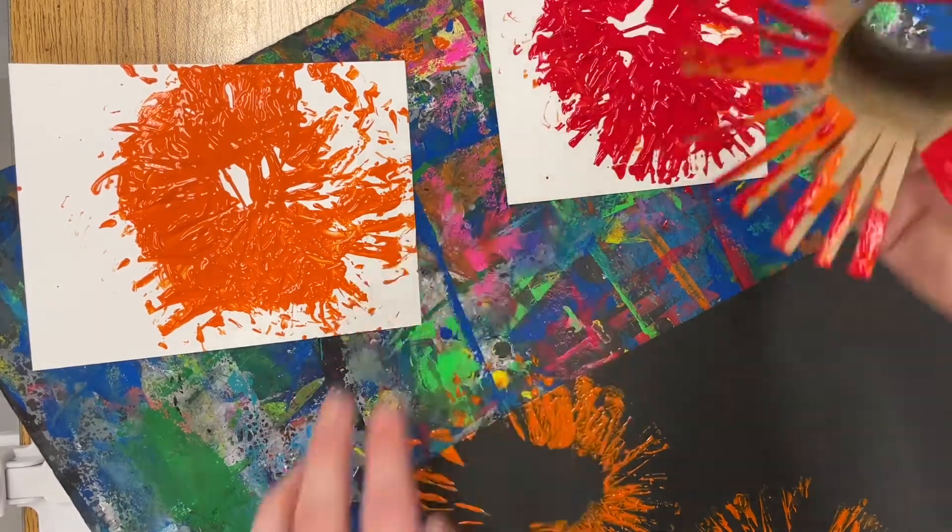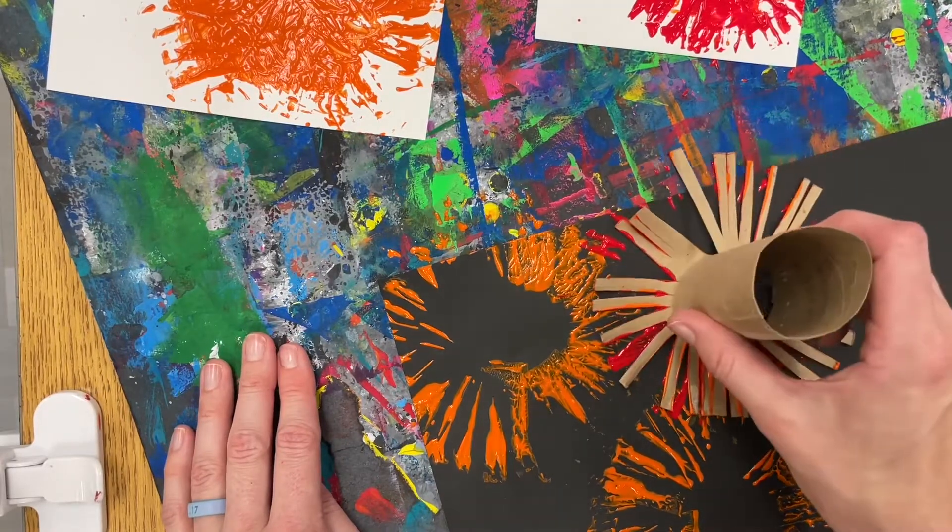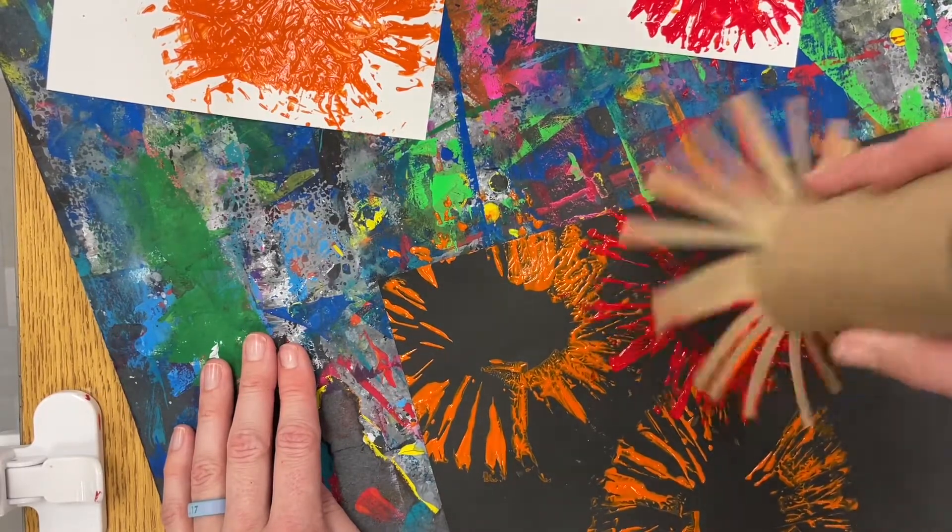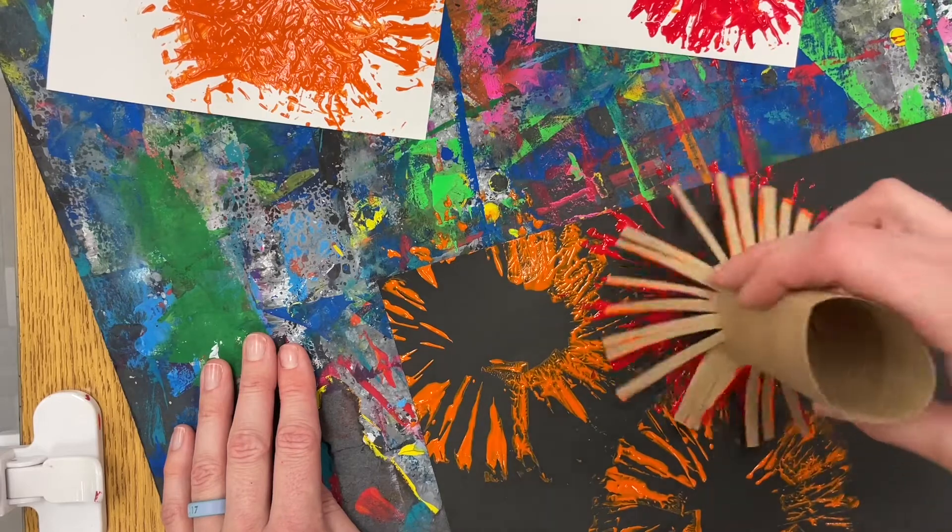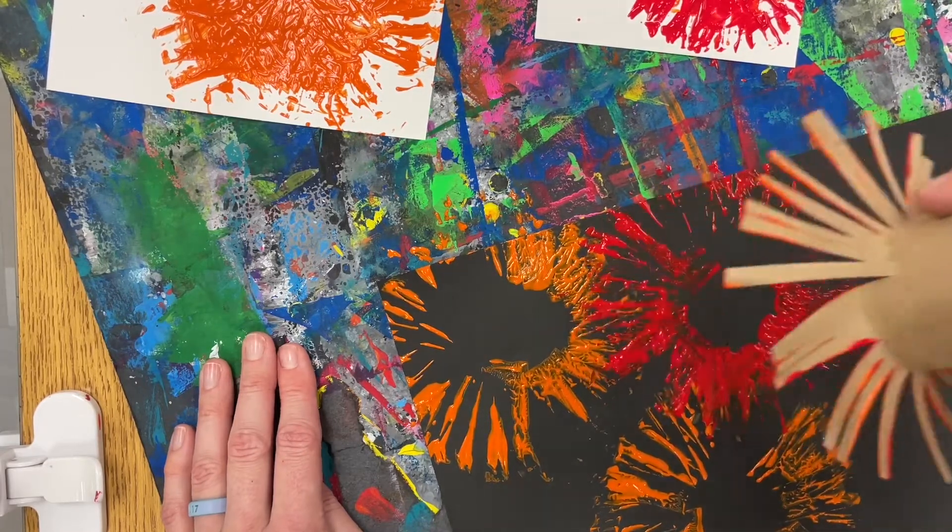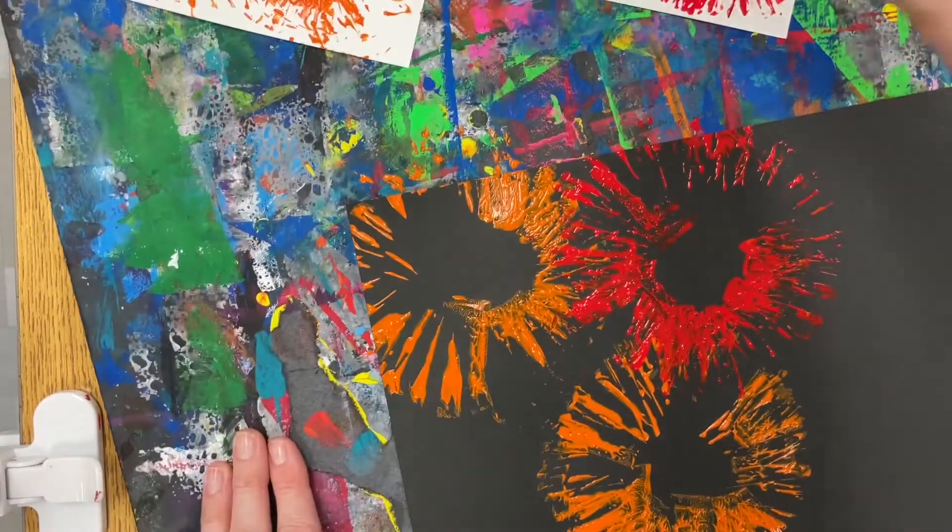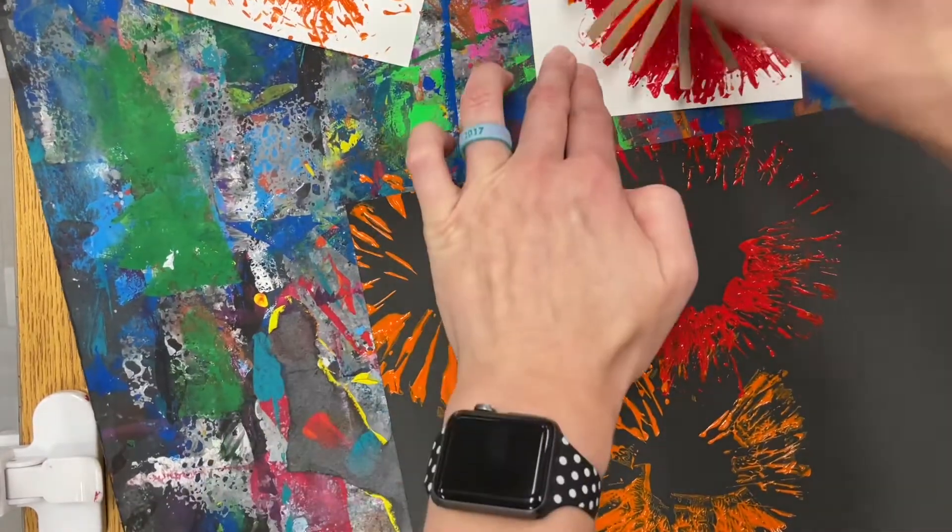You're going to do two or three more the same way and if they overlap, meaning it looks like one flower is on top of the other, that's okay. That's a really cool effect and it's also okay if the petals of your flowers go off the edge of the paper too. Also a really neat effect to add to our paper.